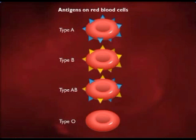Type II hypersensitivities involve interactions of antibodies and surface antigens of cells, followed by complement-assisted lysis of these cells. A typical example is mismatched blood transfusions.